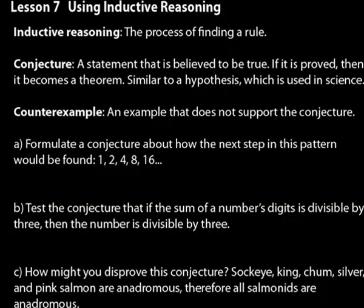Now let's do a practice problem dealing with counterexamples. It says: how might you disprove this conjecture? Sockeye, king, chum, silver, and pink salmon are anadromous; therefore all salmonids are anadromous — meaning they live in both fresh water and salt water. Salmonids are a group of fish that includes rainbow trout, salmon, and other trout species. One counterexample would be to say that kokanee salmon are not anadromous.